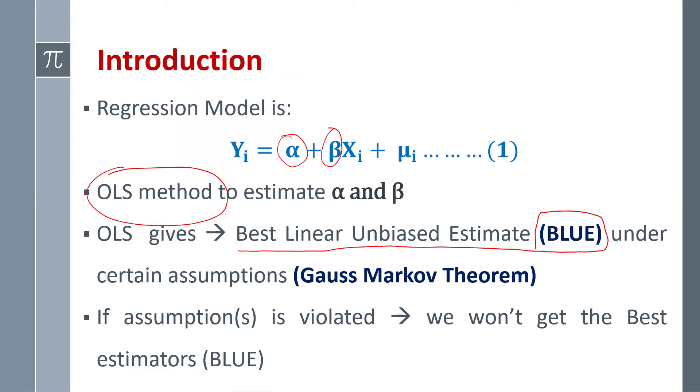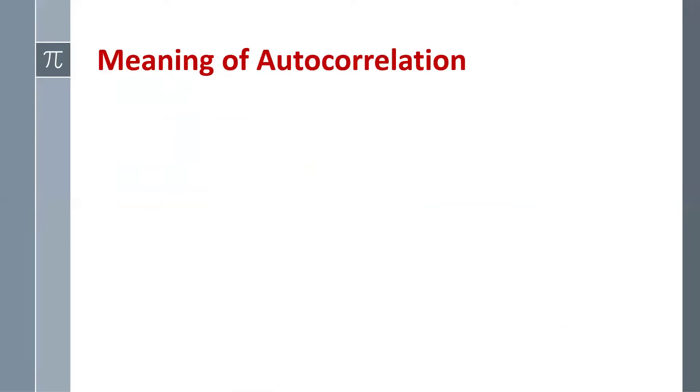Now if some of the assumptions or one assumption is violated, then we are not going to get the best linear unbiased estimator.